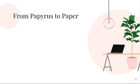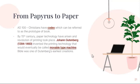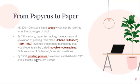Institutions emerged and became sites where knowledge is communicated and transmitted. In 100 AD, Christians had codices, which can be referred to as the prototype of a book. By the 15th century, paper technology had arisen and the revolution of printing took place. Johann Gutenberg invented the printing technology that would eventually be called the movable-type machine. Bible was one of Gutenberg's earliest creations. By the 1500s, printing presses had been established in 242 cities, mostly in Western Europe.